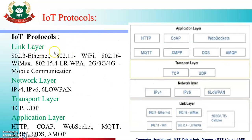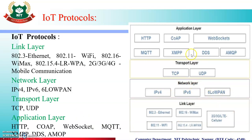Next are IoT Protocols, which are the second part of the Physical Design of IoT. There are four different IoT protocol layers: Link Layer, Network Layer, Transport Layer, and Application Layer. Link Layer protocols include 802.3 Ethernet, 802.11 Wi-Fi, 802.15.4 LR-WPAN, 802.16 WiMAX, and 2G/3G/4G mobile communications. Network layer protocols include IPv4, IPv6, and 6LoWPAN. Transport layer protocols include TCP and UDP. Application layer protocols include HTTP, CoAP, WebSockets, MQTT, XMPP, DDS, and AMQP.